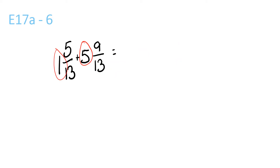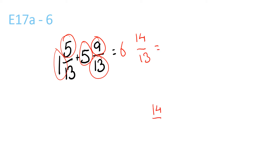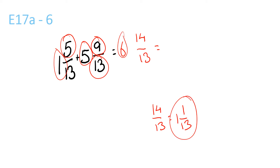5 plus 1 is 6. 5 plus 9 is 14, over 13, which is equal to 1 and 1 over 13. Get the 1 and 1 over 13 and plus it by 6. Your answer is 7 and 1 over 13.